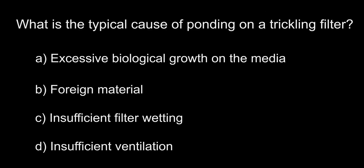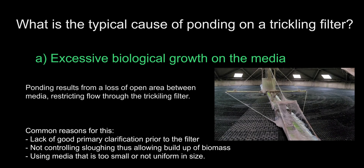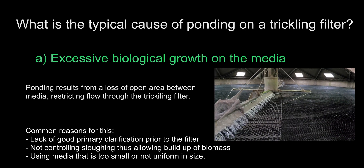What is the typical cause of ponding on a trickling filter? A. Excessive biological growth on the media, B. Foreign material, C. Insufficient filter wetting, D. Insufficient ventilation. The answer is A, excessive biological growth on the media.